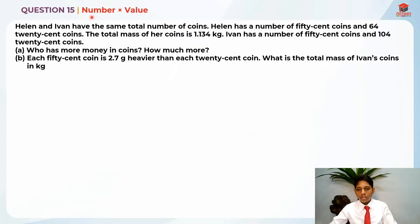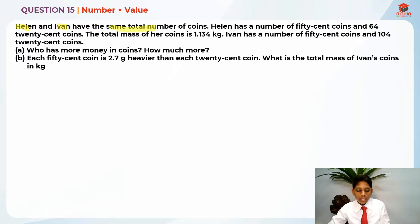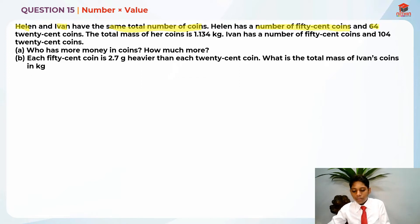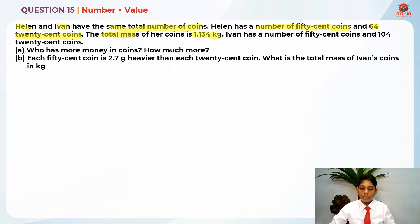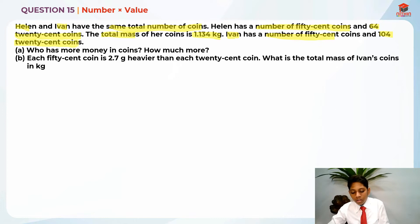Question 15 is testing us on number times value. Helen and Ivan — there are two people here. They have the same number of total coins. Helen has an unknown number of 50-cent coins and 64 twenty-cent coins. Ivan has a number of 50-cent coins and 104 twenty-cent coins. The question asks: who has more money in coins, and how much more?